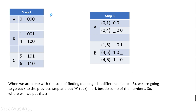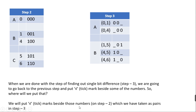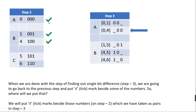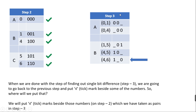Now we go back to Step 2 and put tick marks beside those numbers which we have taken as pairs in Step 3. For pair 0,1 I put tick marks beside 0 and 1. For pair 0,4 I put a tick mark beside 4 — 0 is already checked. I follow the same procedure for all other numbers until all necessary places in Step 2 are ticked.